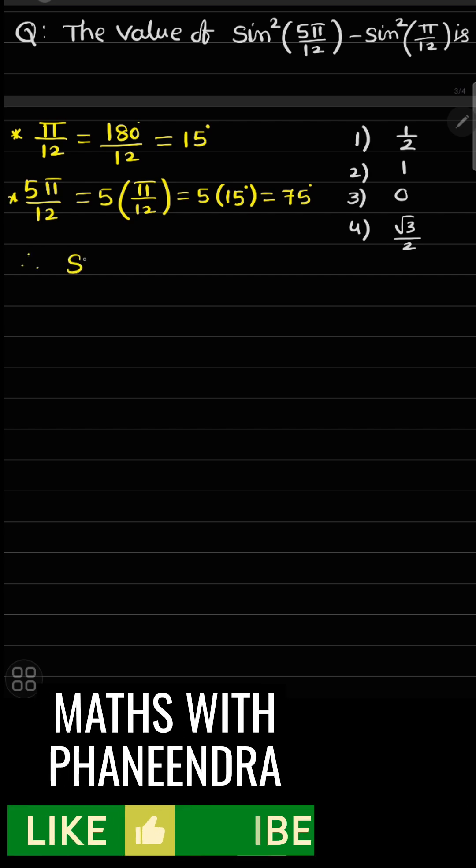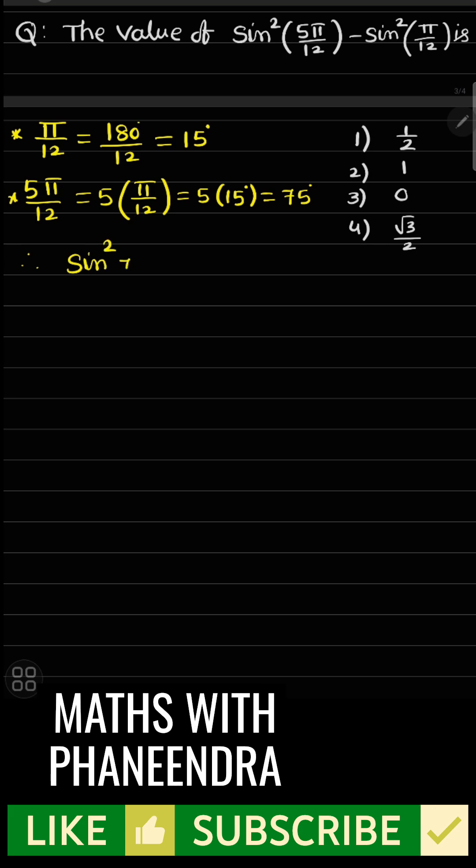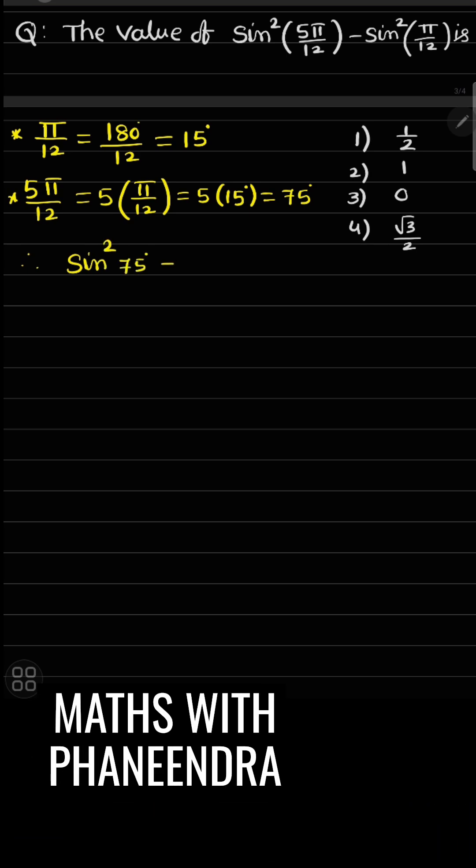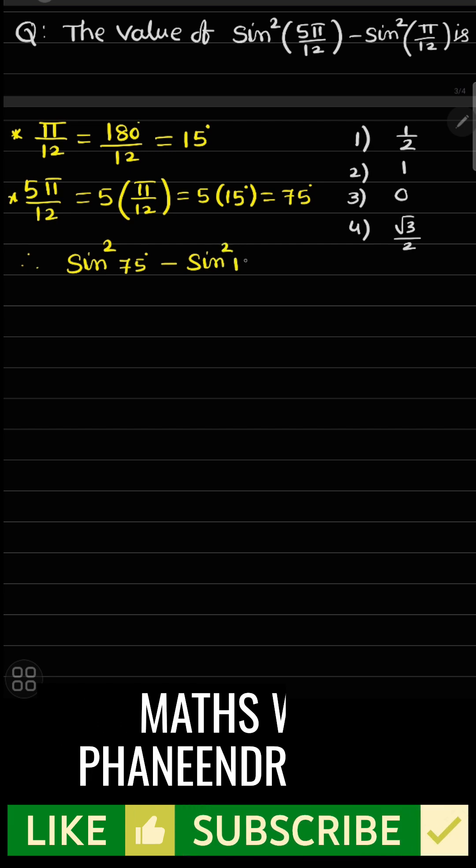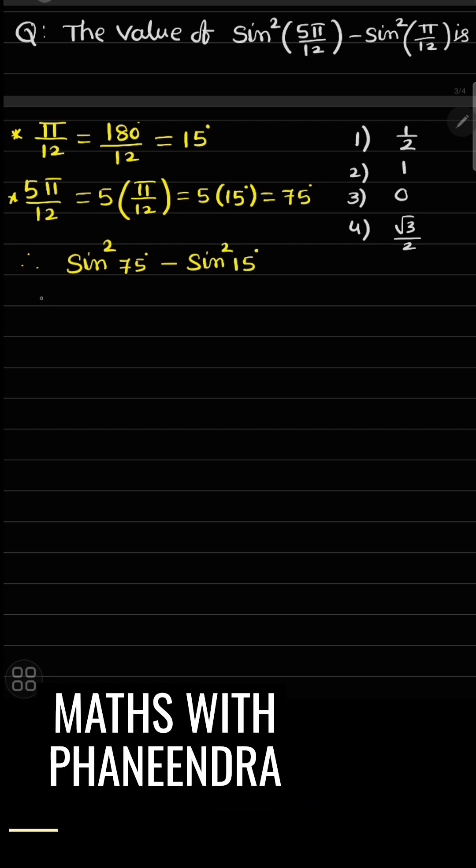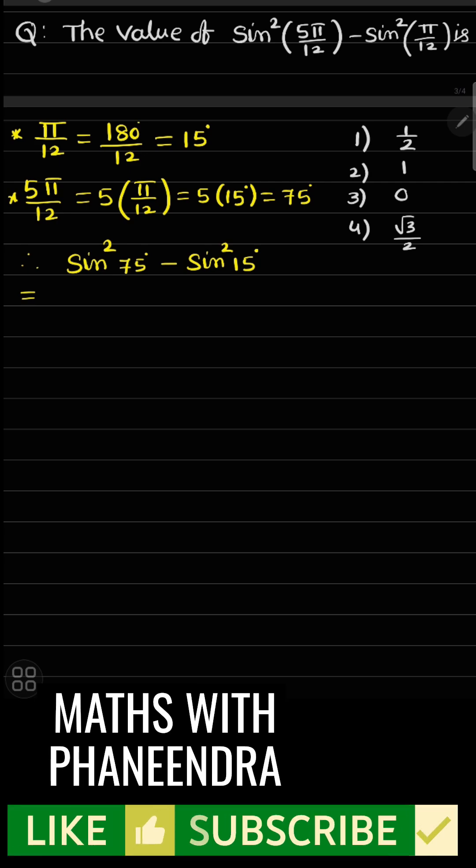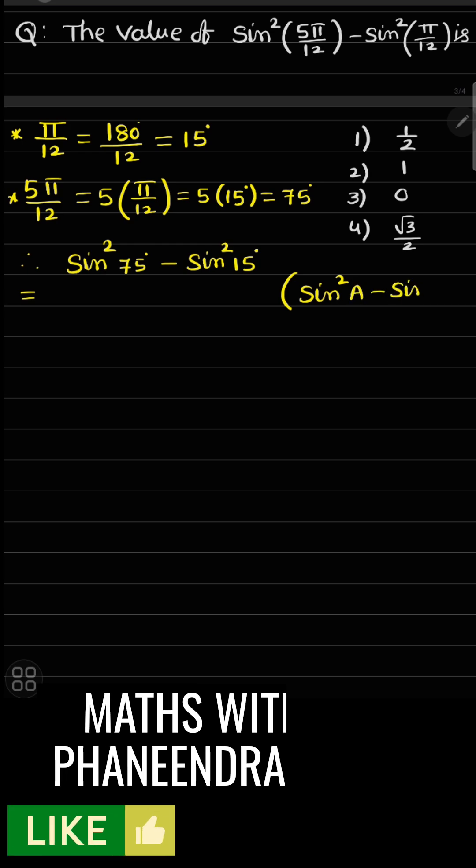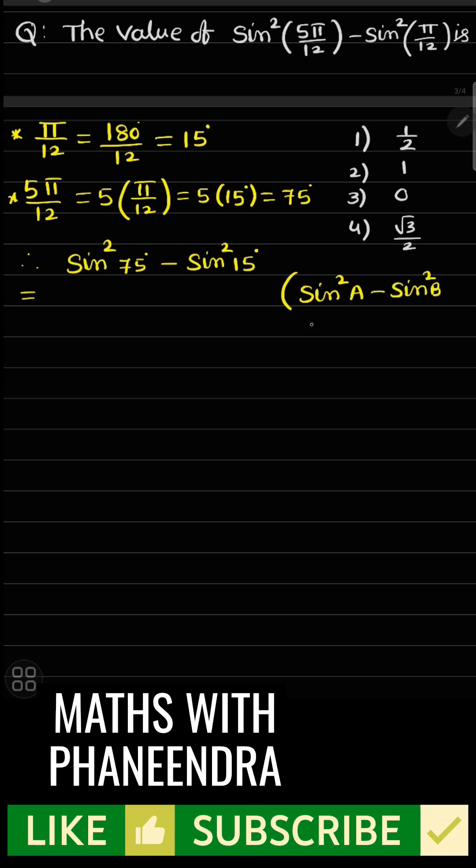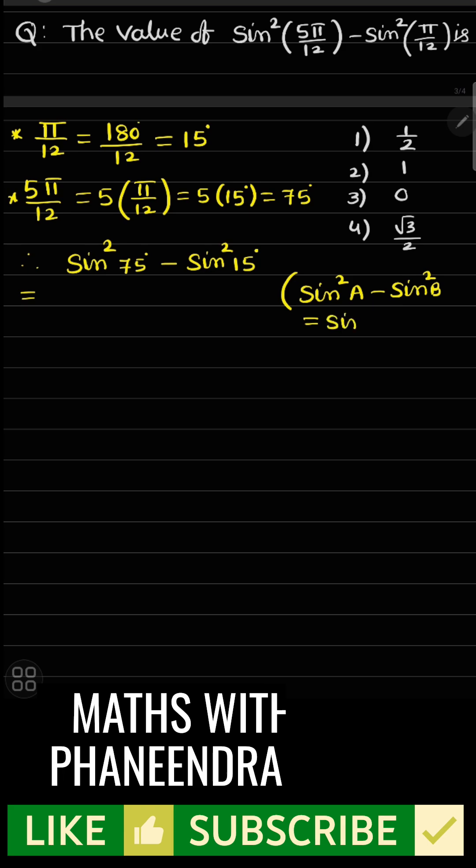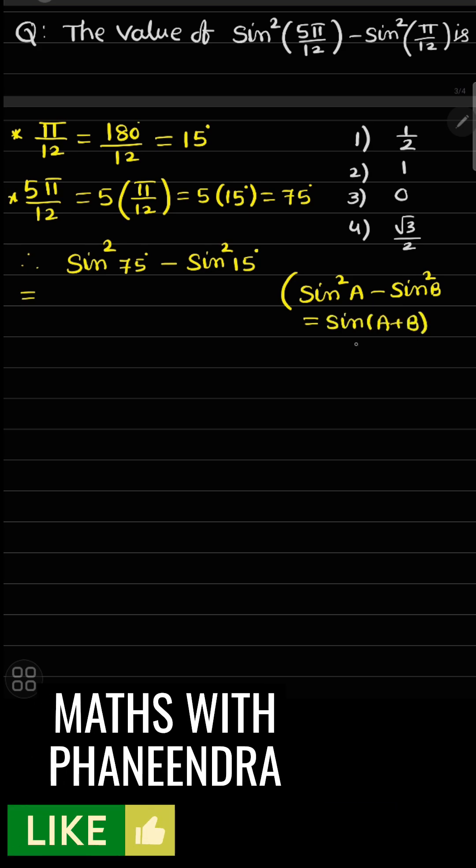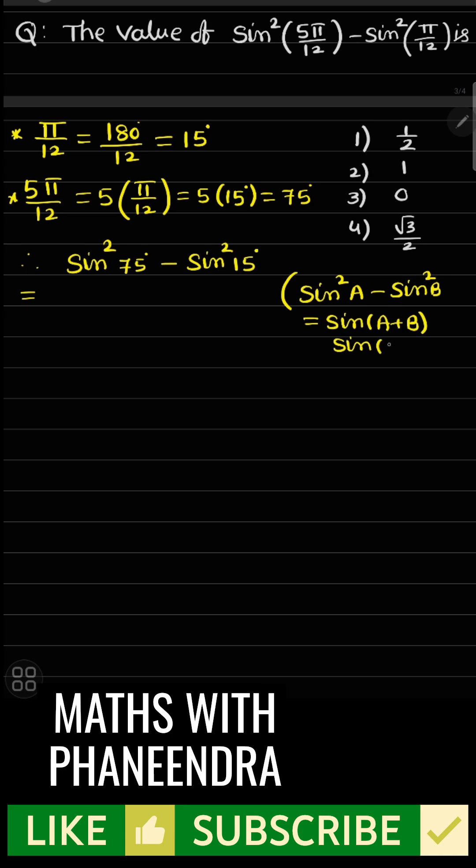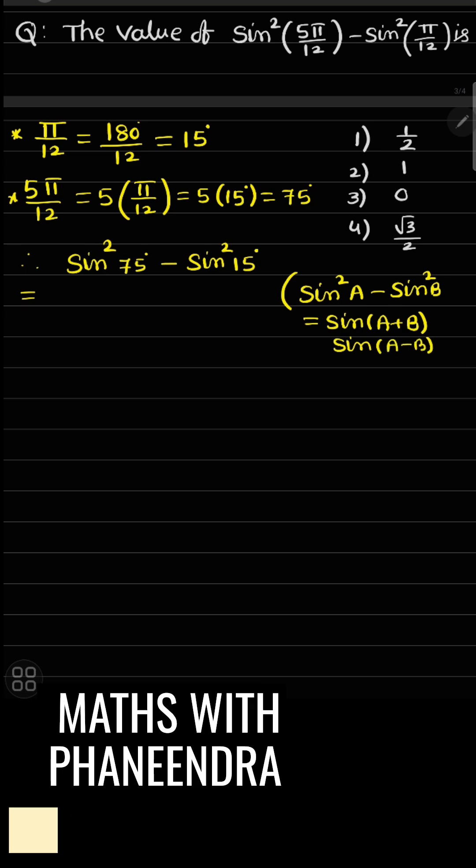Therefore, the question is sin²75° - sin²15°. Here, you know one of the formulas in trigonometry: sin²A - sin²B = sin(A+B) × sin(A-B). This is the product base.